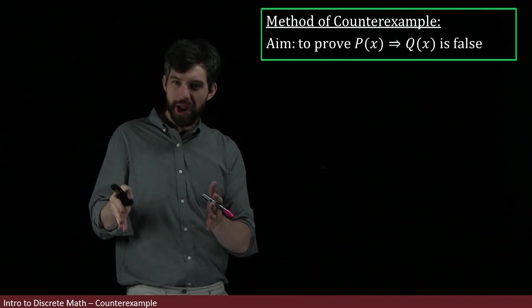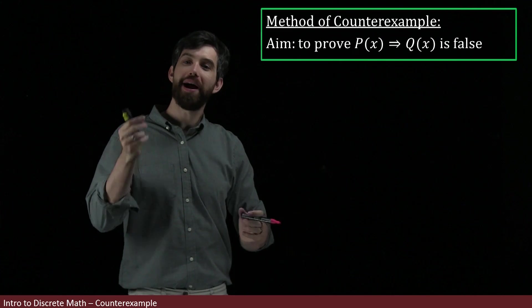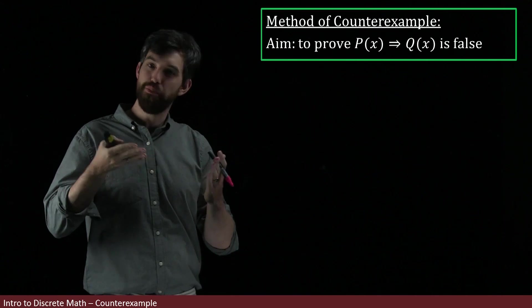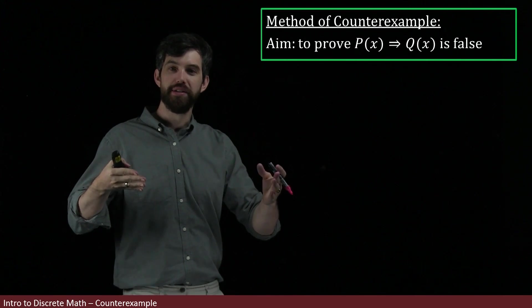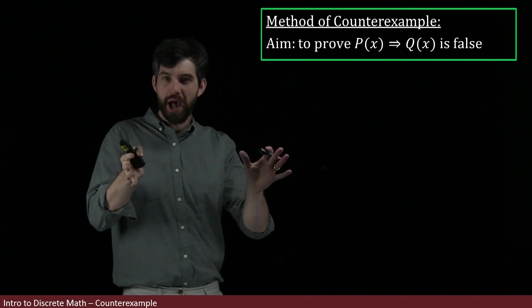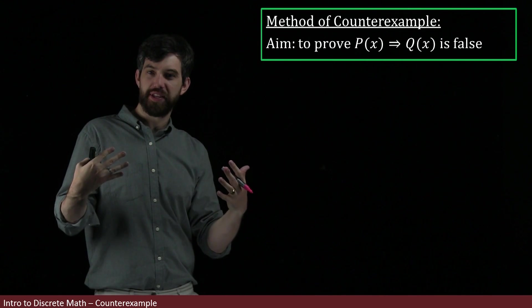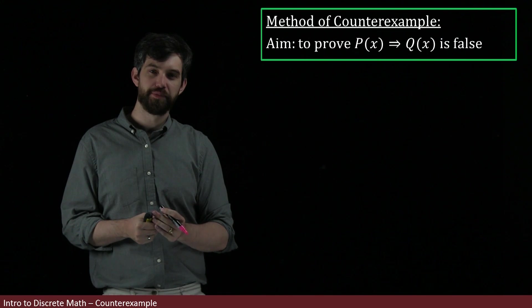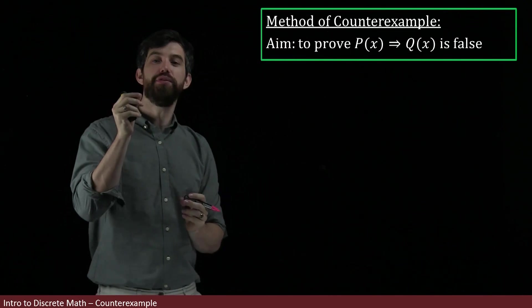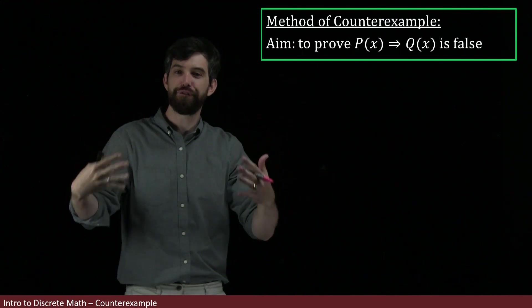What we did in the prior example was to disprove an implication by giving a single counter example. And indeed, this is going to be a very important method to disprove particular implications. So, I want to open up exactly how this works a little bit. So, the goal of this method of counter example is if you're given an implication like P of X implies Q of X, we're going to use the method of a counter example to show that that implication is false.